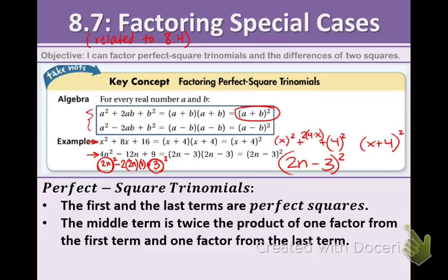There are a few blanks to fill in about perfect-square trinomials. The first and the last terms are perfect squares. Perfect squares are 1, 4, 9, 16, 25, 36, 49, 64, etc.